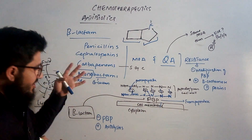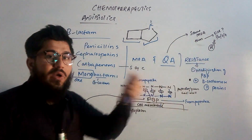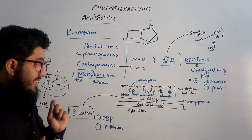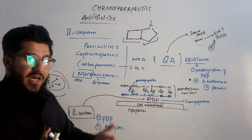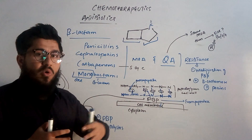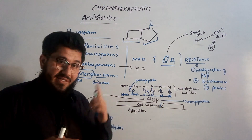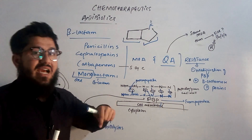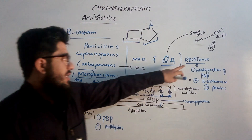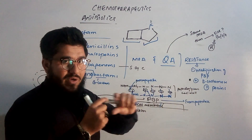Now coming back to the question: if all beta-lactams have the same mechanism of action, why use all of them? Simple answer: with the passage of time, penicillins are no longer functional for most patients because bacteria have developed resistance. We discussed this in previous lectures, but I'll give you a hint again.